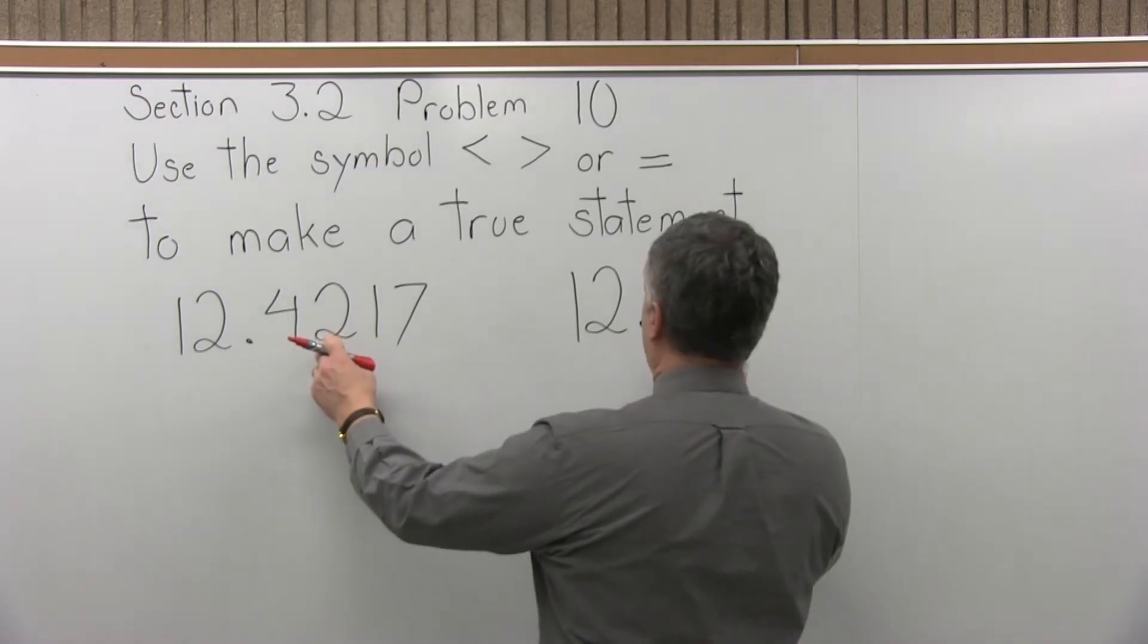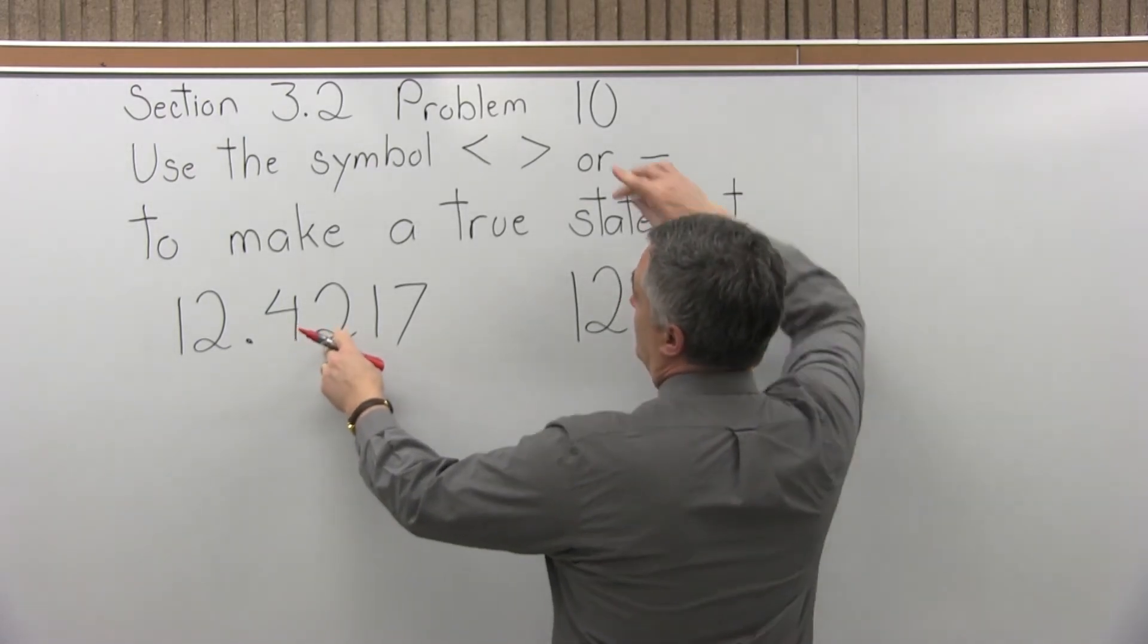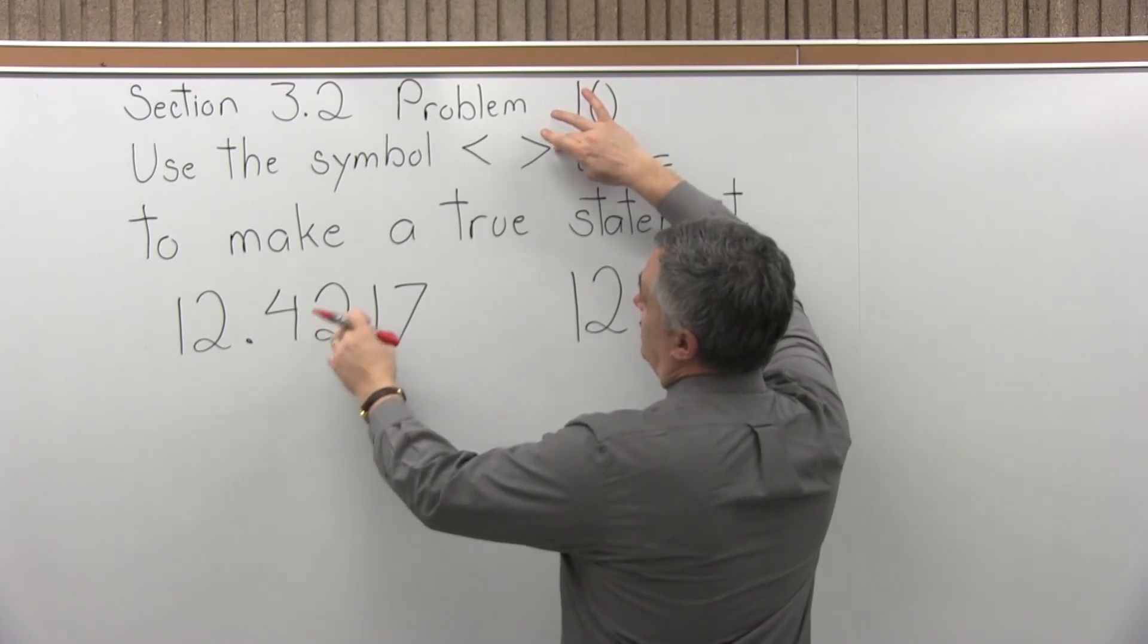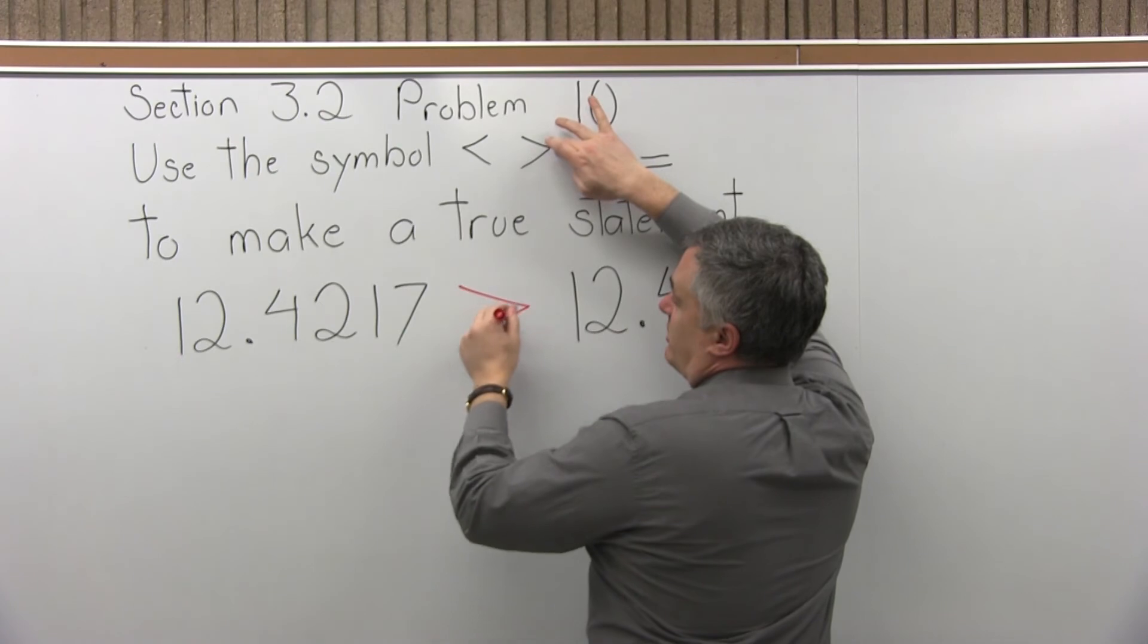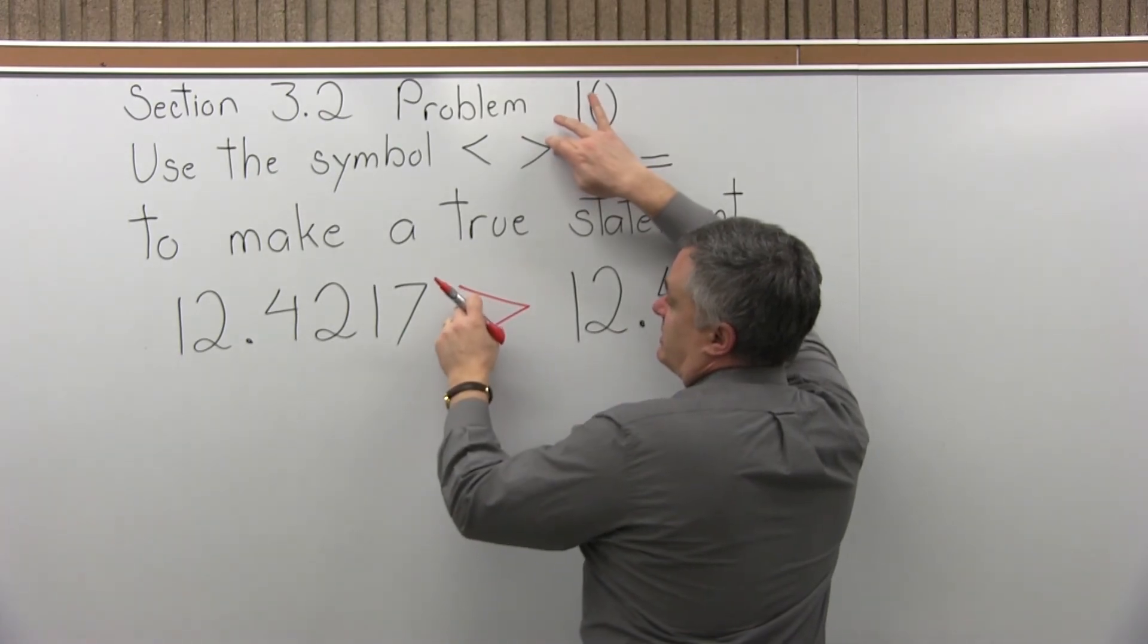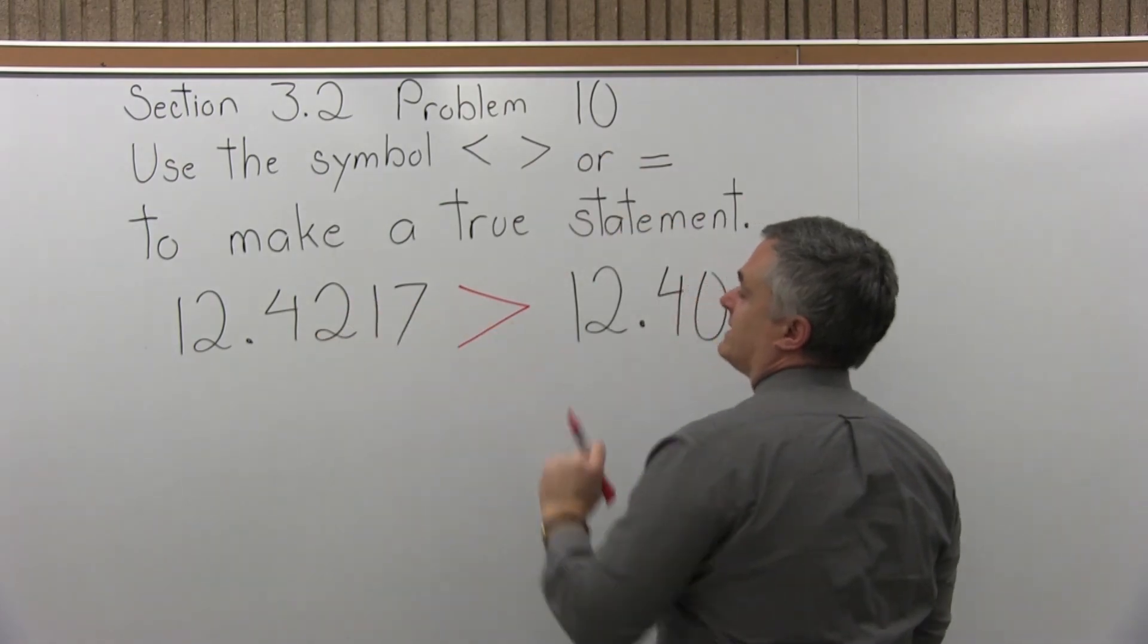The one where we're comparing the two and the zero, the one with the two is larger. I want to choose an inequality symbol that has the open end facing the larger number. So I want to pick the inequality symbol so that the open end faces the first number, the 12.4217.